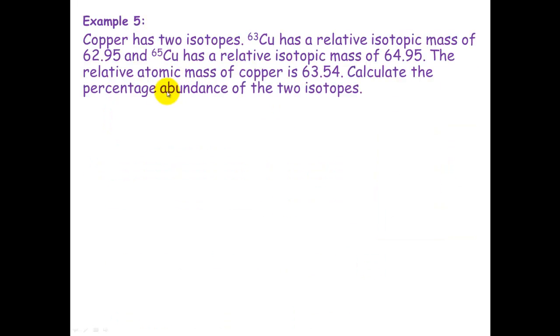Last but not least is when you don't know the percentage abundance of the two isotopes at all, but you do know the relative atomic mass. And this is probably the hardest one mathematically. Let's have a look at the question first. Copper has two isotopes, copper-63 and copper-65. Copper-63 has got a relative isotopic mass of 62.95, and copper-65 has a relative isotopic mass of 64.95. You know that the relative atomic mass of copper is 63.54, but you need to calculate the percentage abundance.